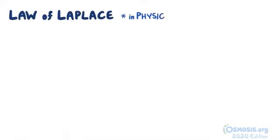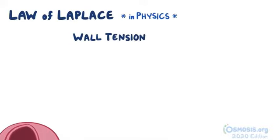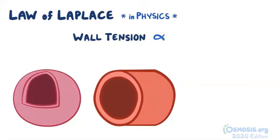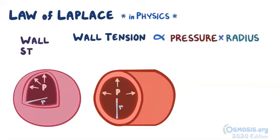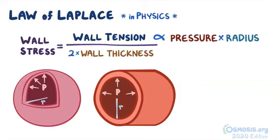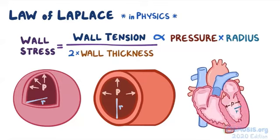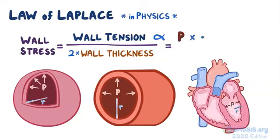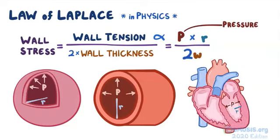As a quick recap, the law of Laplace is a law in physics that states that the wall tension of a hollow sphere or cylinder is proportional to both the pressure of its contents and its radius. Wall stress is the wall tension divided by 2 times the wall thickness. Now when applied to hollow spherical objects like the left ventricle of the heart, the following formula is used: Wall stress equals p times r over 2w, where p is pressure, r is total radius, and w is wall thickness.